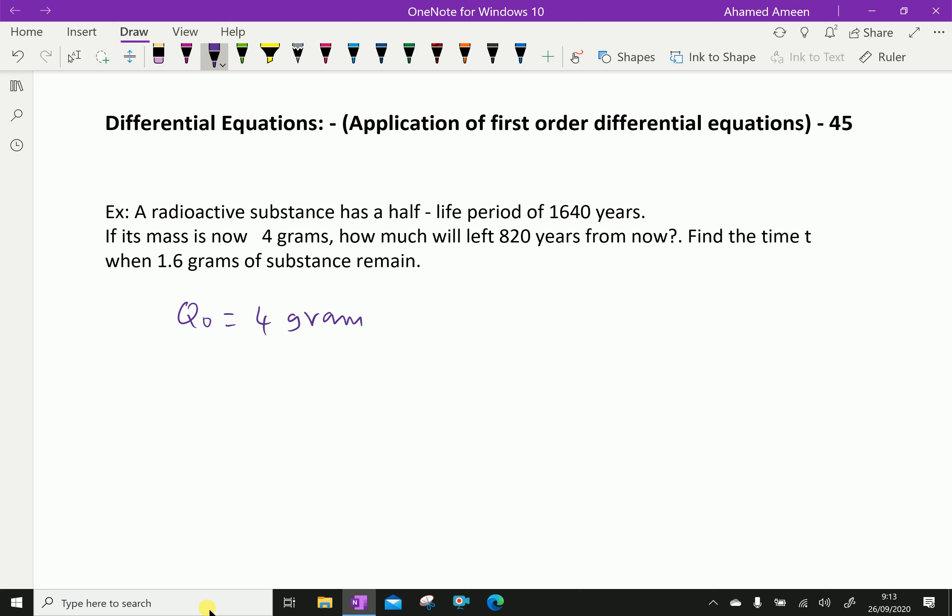Now, the exponential formula Q equals Q0 times e to the power minus kt, where k is the exponential constant.